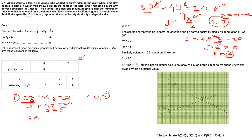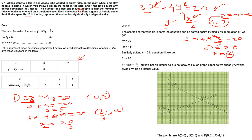When X = 20/3 ≈ 6.66, it is difficult to mark precisely on the graph. So putting Y = 0 to find X is not a good choice for this equation. Normally putting X = 0 and finding Y, then Y = 0 and finding X, is a good method. But here, since 20/3 is a decimal, we need a better approach.